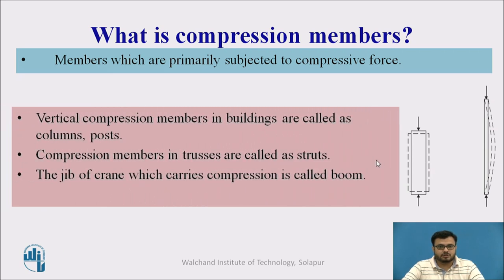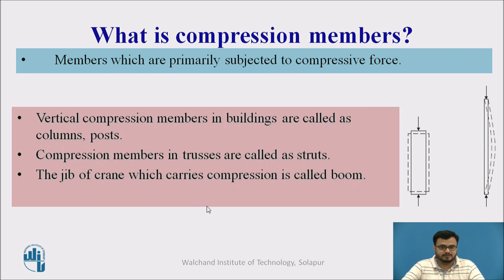There are various nomenclatures for compression members. The member which carries vertical compressive force in a building is called a column or post. The same compression member in trusses is called a strut. The same compression member in a jib crane is called a boom.